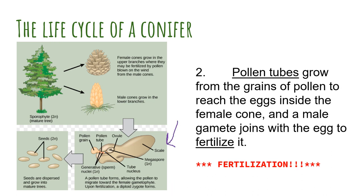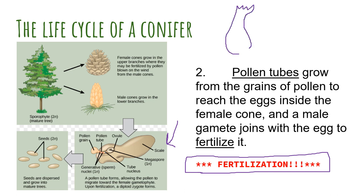Step two is when the pollen tubes grow from the grains of pollen to reach the eggs inside the female cone, and a male gamete joins with the egg to fertilize it. This is that big step — fertilization. Just like in a flower, once the pollen grain attaches to the stigma, it begins to grow that pollen tube down because it's trying to reach the ovules inside of the ovary. The same thing happens with the pine cone: once the pollen grain attaches to the egg cell, it begins to grow a pollen tube as well. Looking at the picture, here's the pollen grain attached — it's trying to get to the ovule, so it grows this pollen tube.